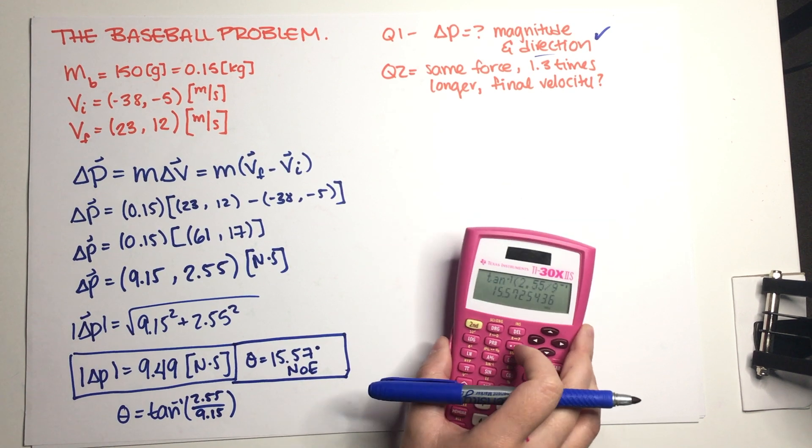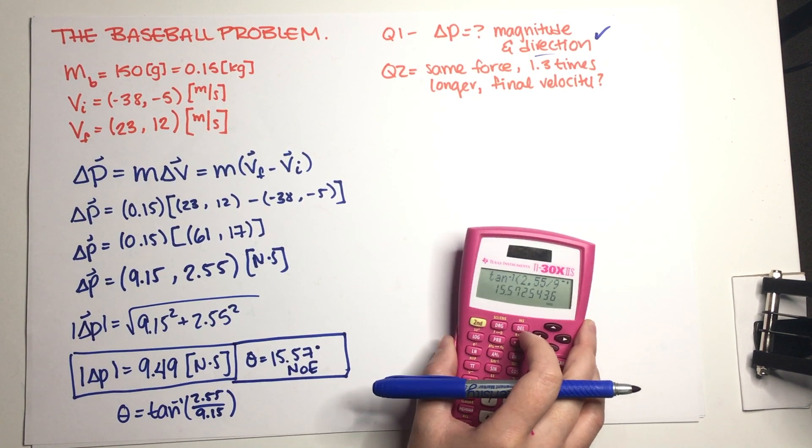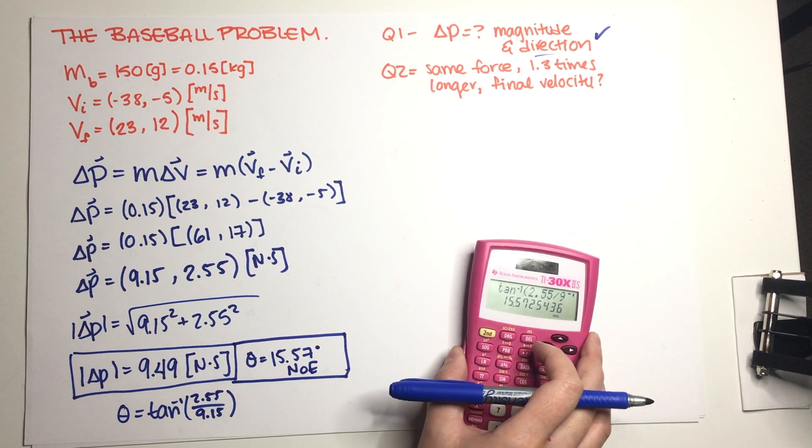So now for the second problem, let's just go back. So the batter in part A hits the same pitch with the exact same vector force.